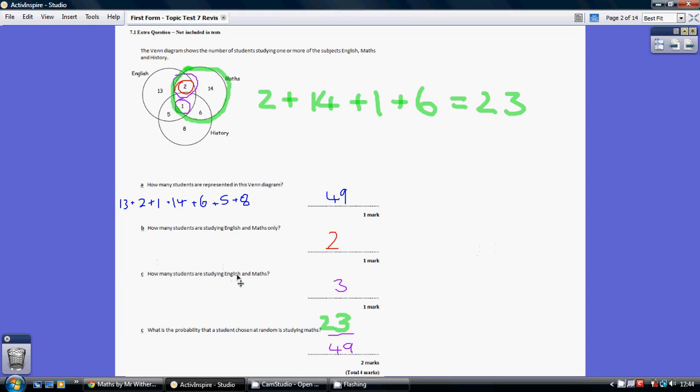How many students are studying English and maths? Well, that is 3 students because these students are studying English and maths. This one happens to be studying history as well, but so be it. That is the reason for the difference. That word 'only' makes all the difference. Right, part C.